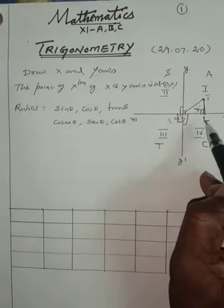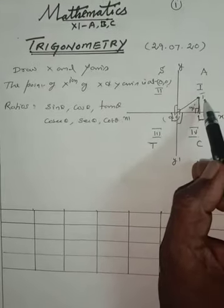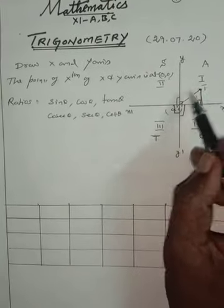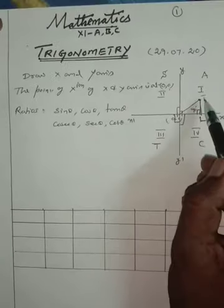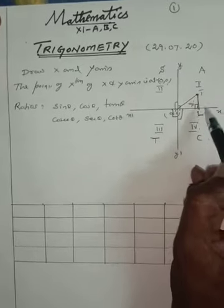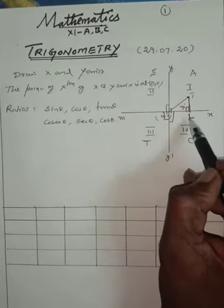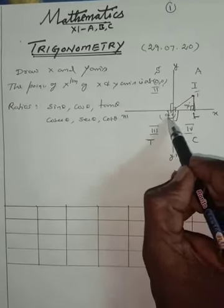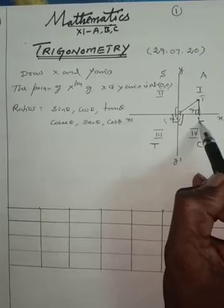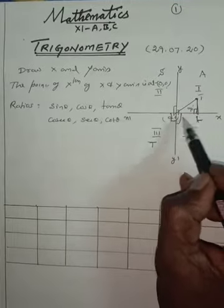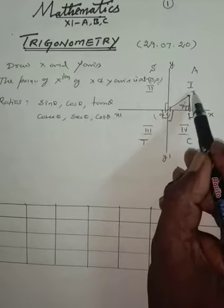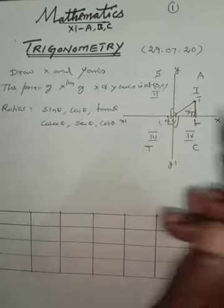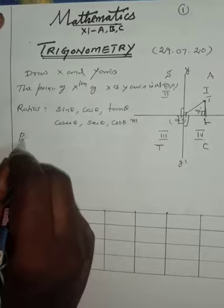Triangle O, L, T is a right-angled triangle where T, L is the opposite side; O, L is the adjacent side; and O, T is the hypotenuse side.